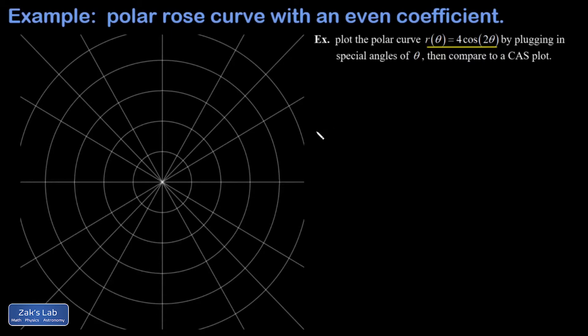Where do the tips of the petals occur? That's where r has maximum magnitude, and that's going to be 4. It'll correspond to the maxima and the minima of the cosine function.